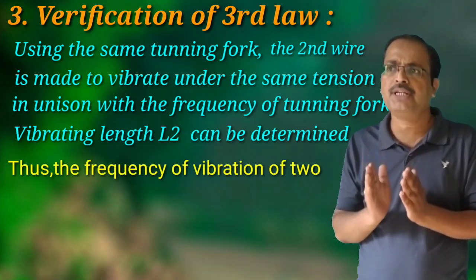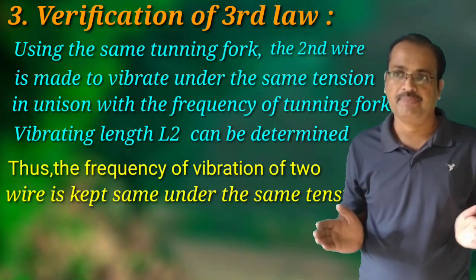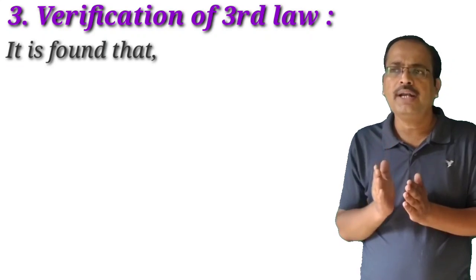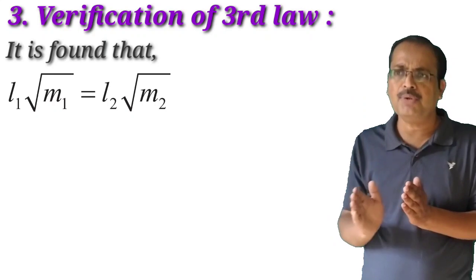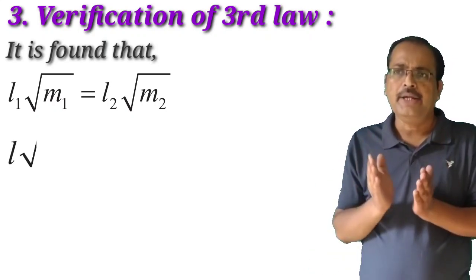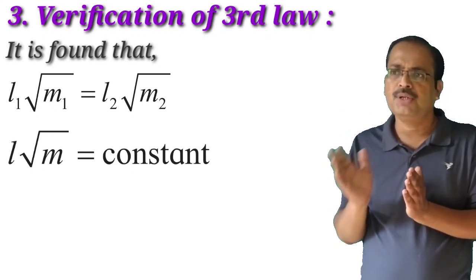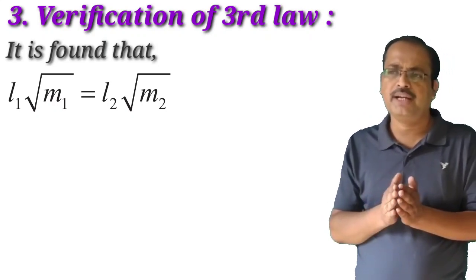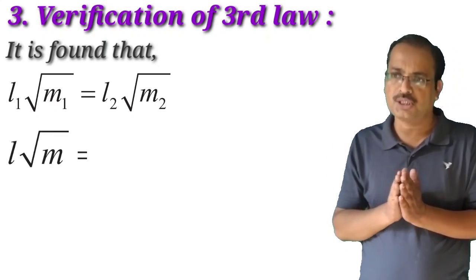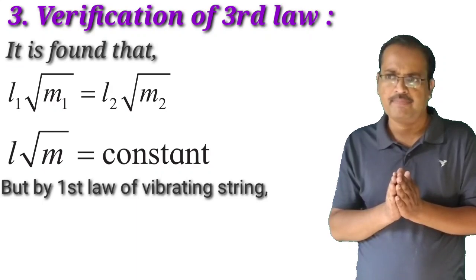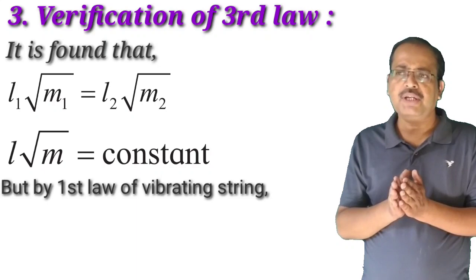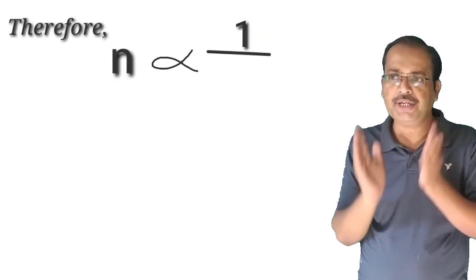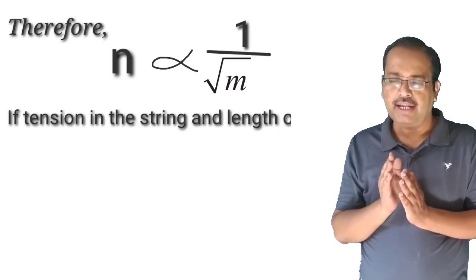Thus, the frequency of vibration of both wires is kept the same under the same tension T. It is found that L1×√m1 = L2×√m2, which can be written as L×√m = constant. But by the first law of vibrating string, N is inversely proportional to L. Therefore, N is inversely proportional to the square root of m, if tension in the string and length of the string are constant. This is the verification of the third law of linear density.